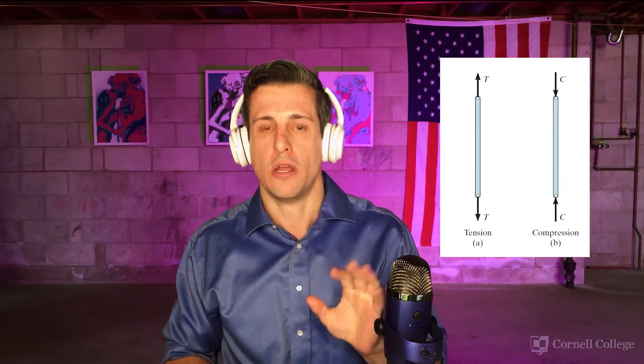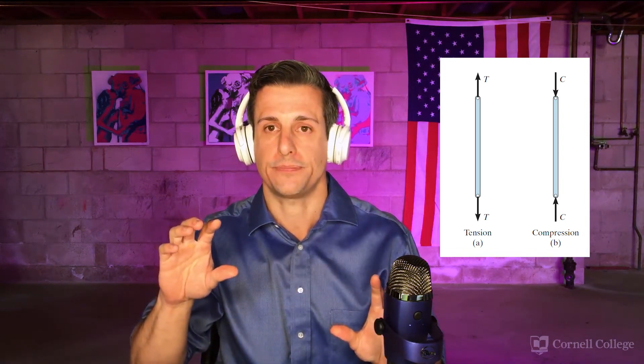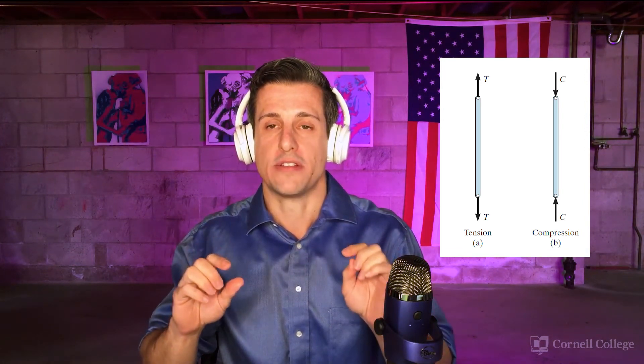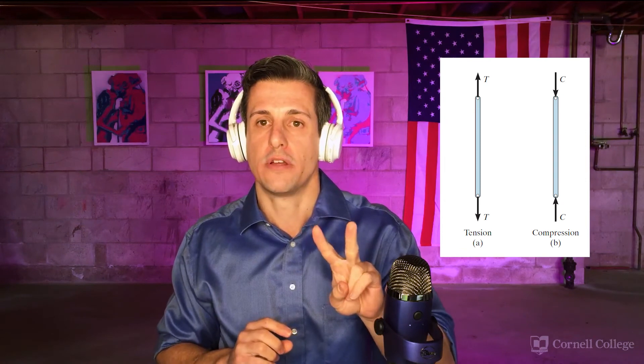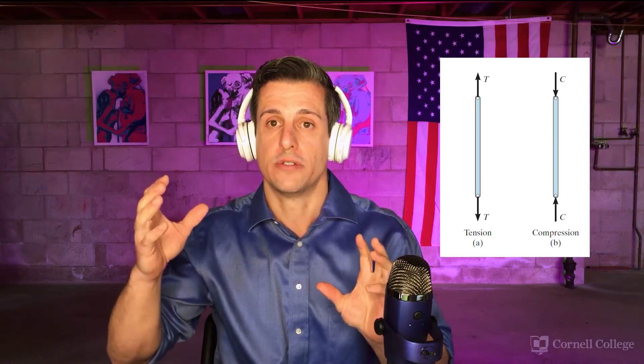With these two assumptions, it ensures that each member of the truss system is a two-force member. A two-force member means that the forces are directly in line with the direction that member is pointed. With that being said, there are only two options for the force system of a member of a truss: it can either be in tension or compression. We'll move on to show you how to analyze these systems.